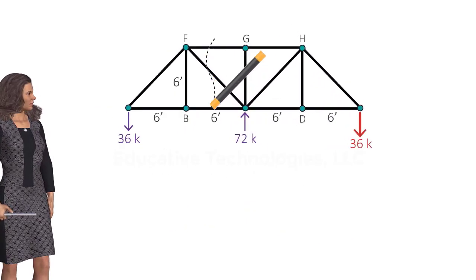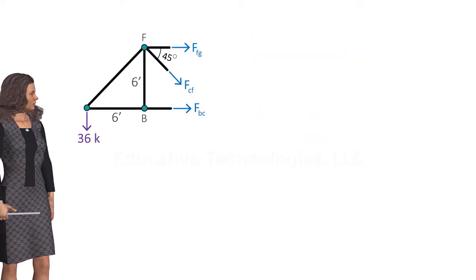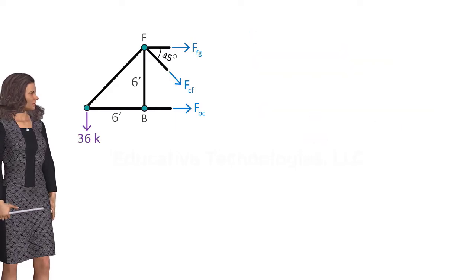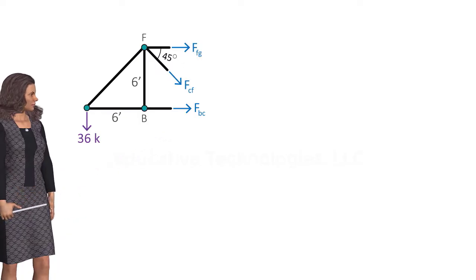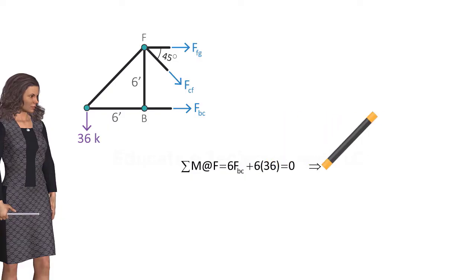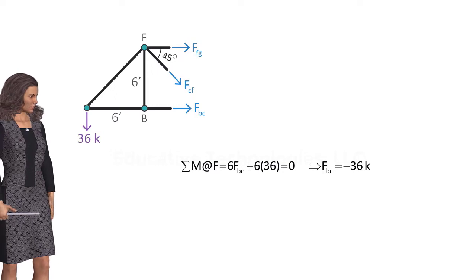We cut the truss like this. Now we can use the equilibrium equations to calculate the unknown member forces. Since we are interested in determining FBC only, we can calculate that force by writing the moment equilibrium equation about point F. Solving this equation for FBC, we get FBC equals negative 36k.